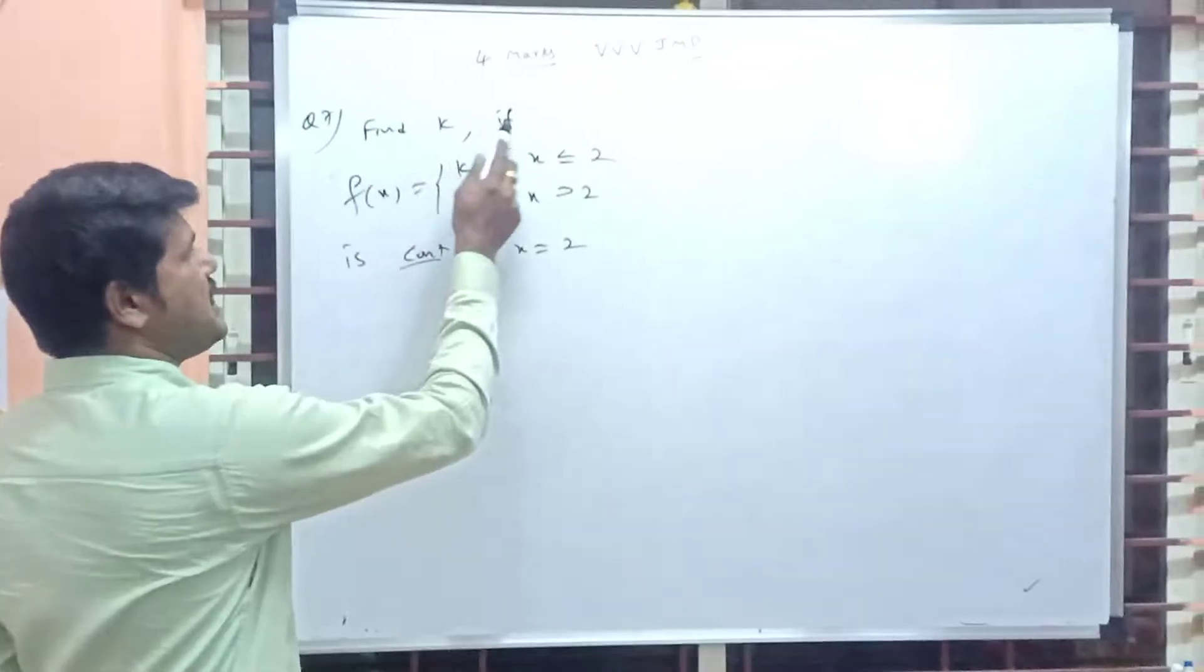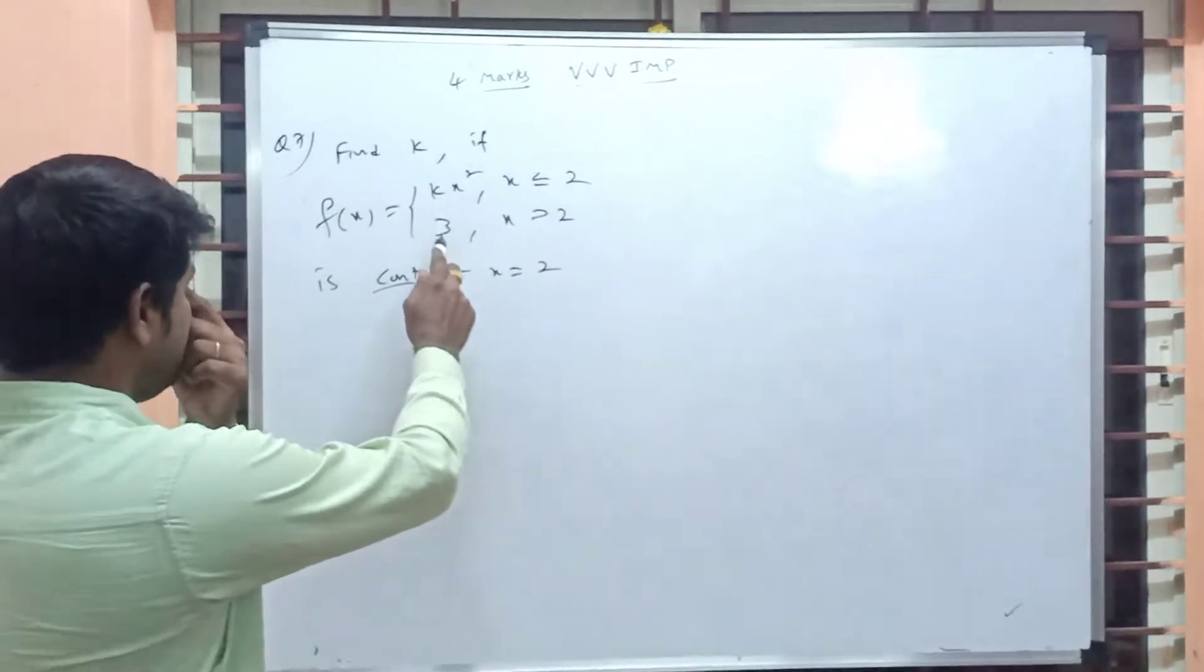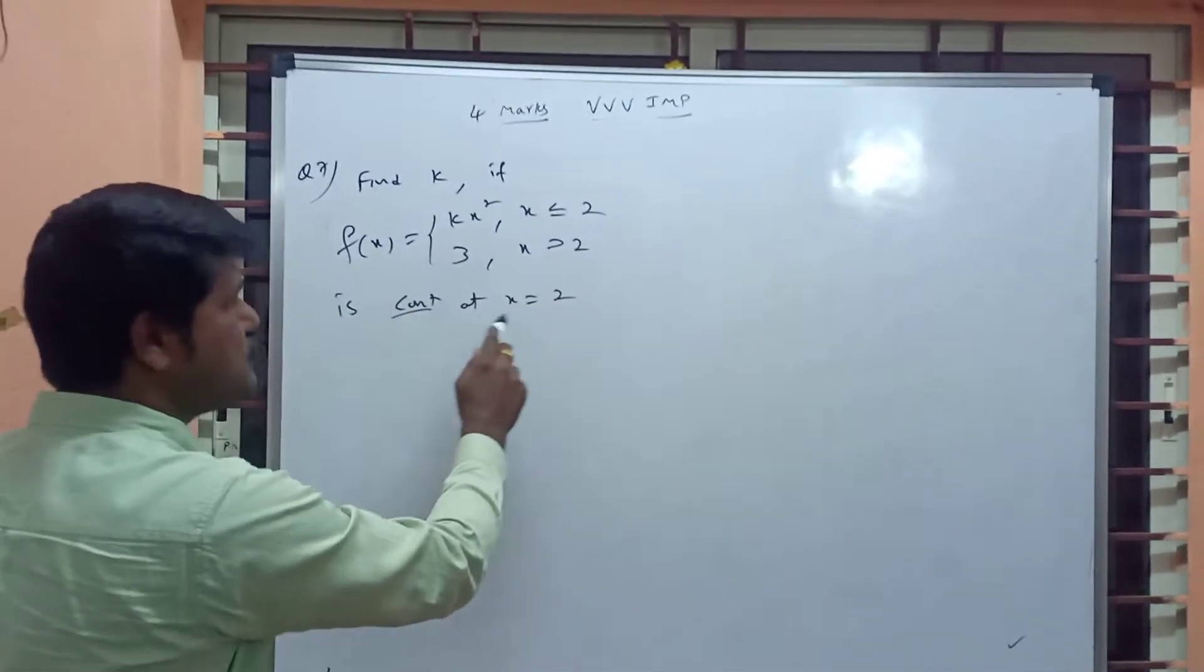One more question. Find k if f(x) equals kx square, x less than or equal to 2, and 3 when x is greater than 2, is continuous at x equal to 2.